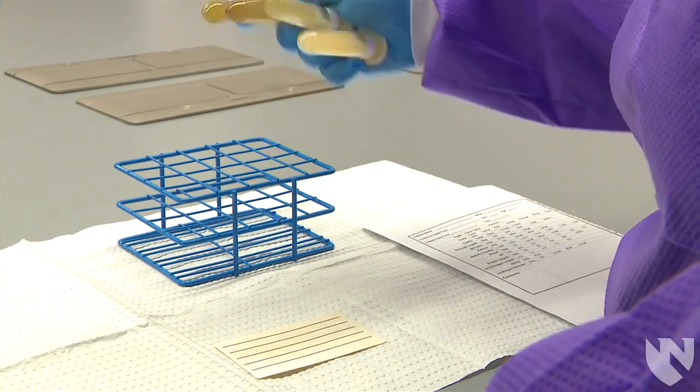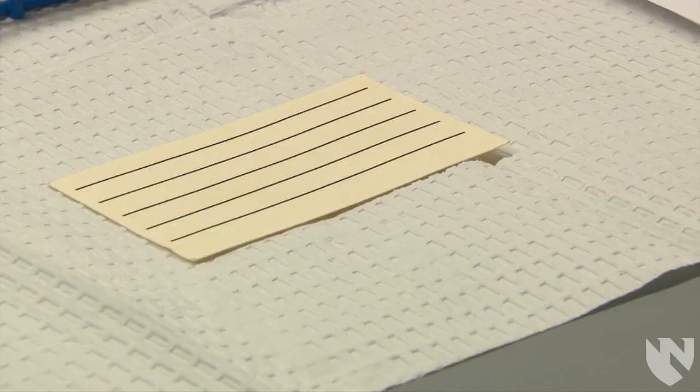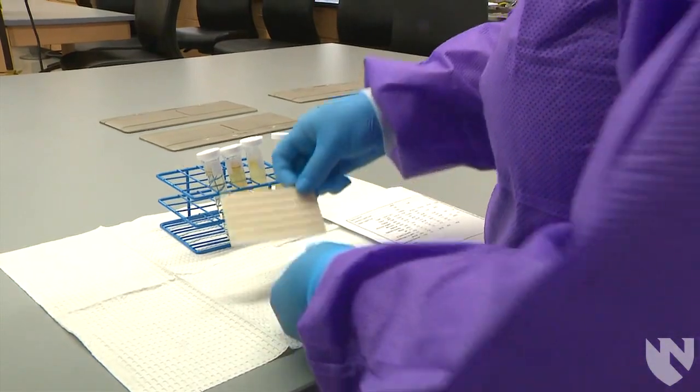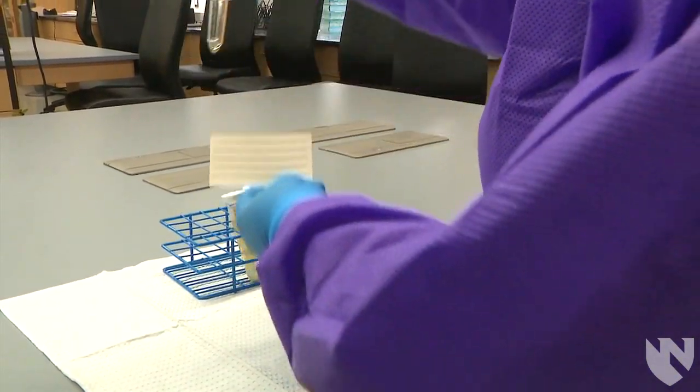To evaluate the urine clarity, we will hold the urine conical tube against a lined index card or you can use any sheet of paper with black text on it. In this video, we will be using an index card with lines.